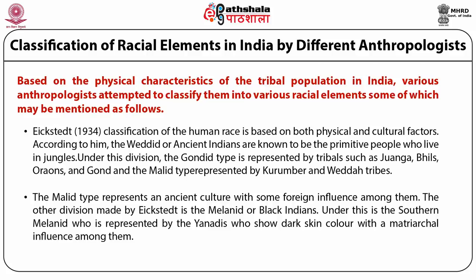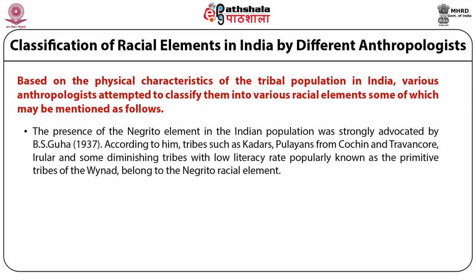As for their cultural traits, the tribes under Gondid type show matriarchal influence, use mattock, and believe in totemism. The Malid type represents an ancient culture with some foreign influence among them. The other division made by Eickstedt is Melanid or Black Indians. Under this, the Southern Melanid is represented by Yanadis, who show dark skin color with a matriarchal influence among them.